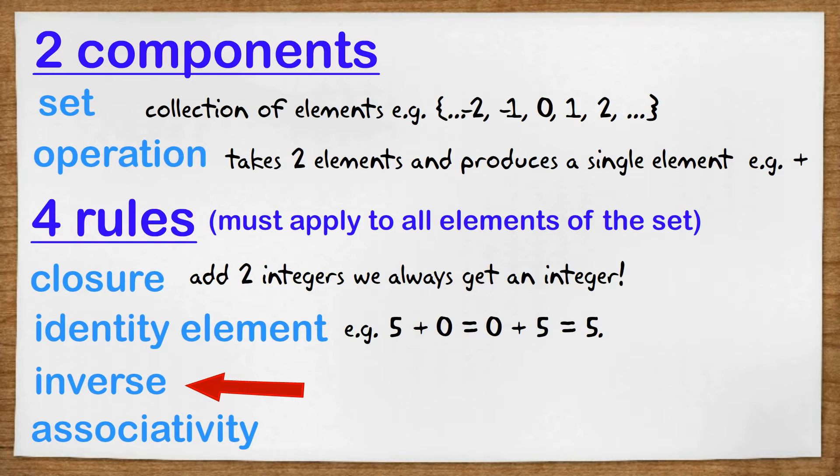The next thing we need is the existence of an inverse. For every element we must be able to find an element of the set so that when we perform the operation we get the identity element. In the integers an example would be that the number seven has an inverse which is negative seven, and we see that seven plus negative seven equals negative seven plus seven which equals zero.